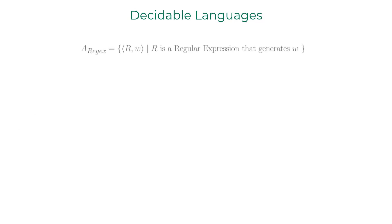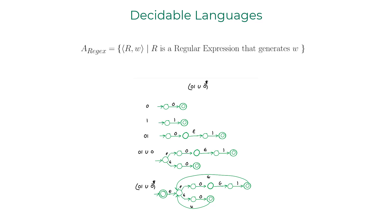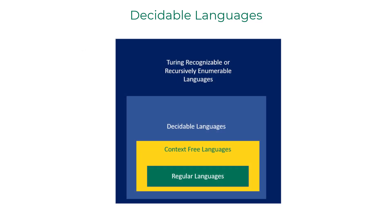Now, how about A_regex? Again, there exists an algorithmic procedure to convert a regular expression to an NFA, which can be converted to DFA. Hence, A_regex is decidable. Turns out even context-free languages are decidable languages. Here is the relationship among class of languages that we have seen so far.